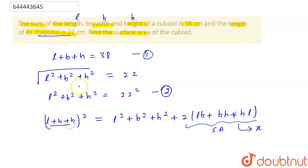So now if we put here value of L plus B plus H, it will become 38 square is equal to, we have given here L square plus B square plus H square is equal to 22 square. So it is 22 square plus we have denoted this by X, which is equal to surface area.